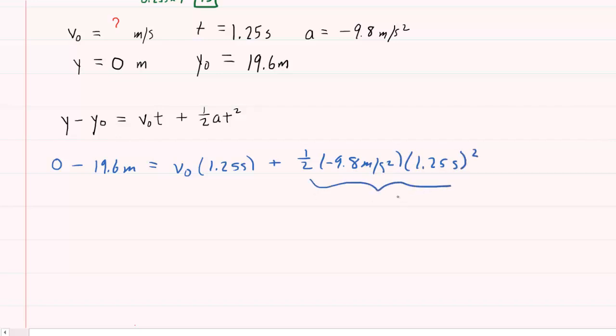On your calculator, type all of that in at once, and you're going to get minus 7.65625. That should come out in terms of meters. And the other side is negative 19.6 meters.